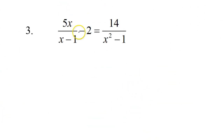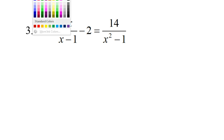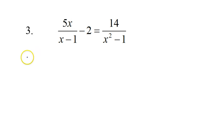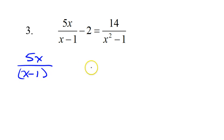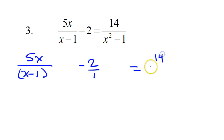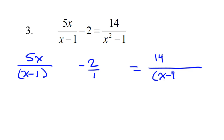Let's keep going and do number 3 in the same way. So I've got 5x over x minus 1, and I've got minus 2 over 1, and I've got 14 over — I'm going to go ahead and factor this. x squared minus 1 factors as x minus 1 times x plus 1, the difference of two squares.